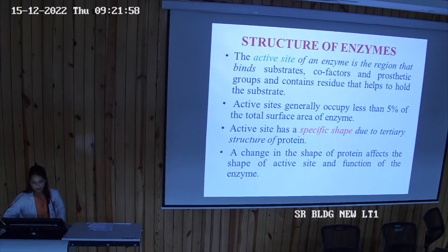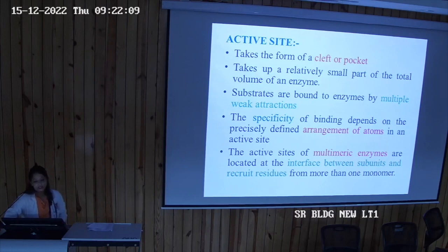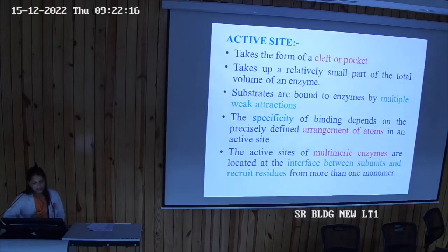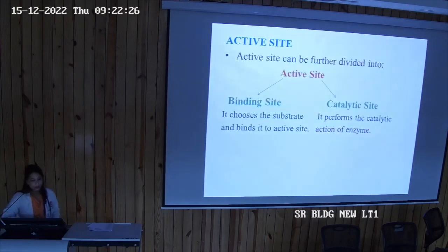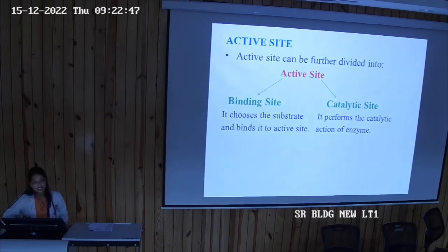After binding, product forms. The active site forms a cleft or pocket occupying a small part of the total enzyme volume. Substrates bind by weak attractions, and specificity depends on the precise arrangement of atoms. The active site has two regions: the binding site, which selects and holds the substrate, and the catalytic site, which performs the chemical reaction.